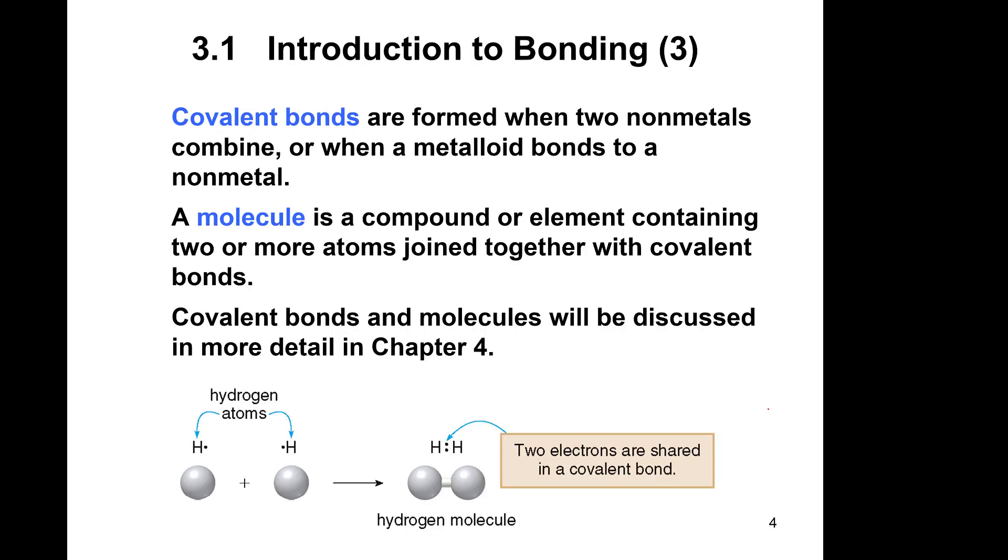Covalent bonds are going to form from sharing of two non-metals. When those two non-metals combine, or it could be metalloids, we call that a molecule. A molecule is a compound that's formed from elements that were non-metals to begin with. They are together with a covalent bond, which means that they share electrons. We will talk more about covalent bonds and molecules in Chapter 4.